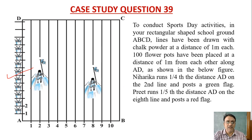Niharika runs one fourth the distance AD at second line. So second line, this is Niharika and she posts a green flag here. And Preeth runs one by fifth the distance AD on the eighth line. This is the eighth line and she is Preeth and she posts a red flag.